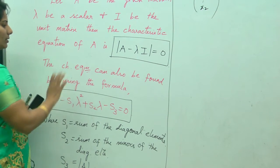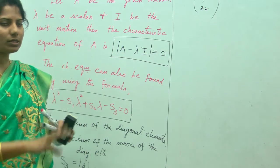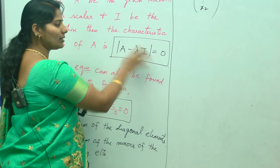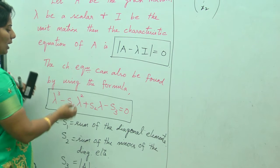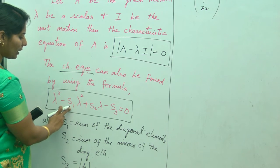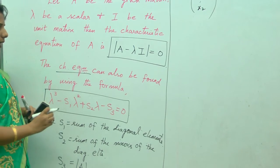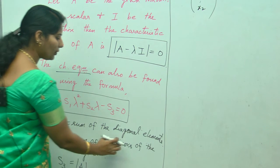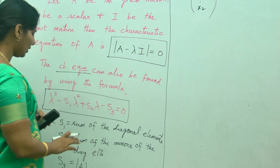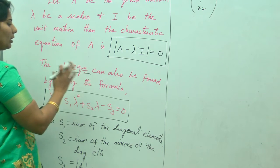This is how you will find the characteristic equation. While doing it by det(A minus lambda I) = 0, students will make mistakes. So for a 2×2 matrix you can use that method, but if it is a 3×3 matrix, the formula with S1, S2, S3 is the simpler and easier way. S1 is the sum of diagonal elements, S2 is the sum of minors of each diagonal element, and S3 is the determinant of A. Going step by step makes the characteristic equation easy to find.